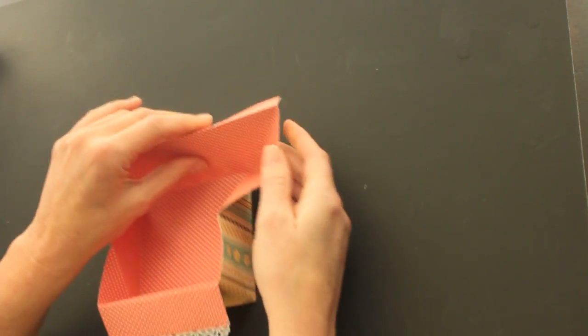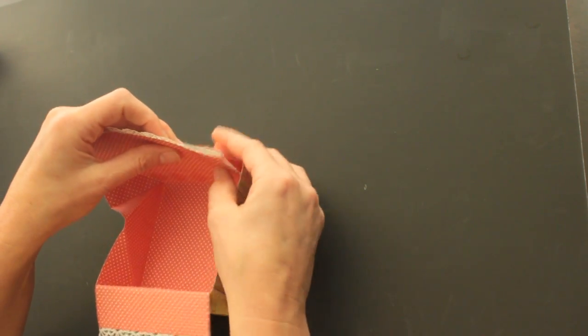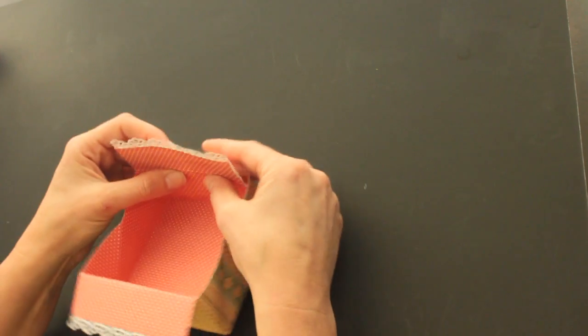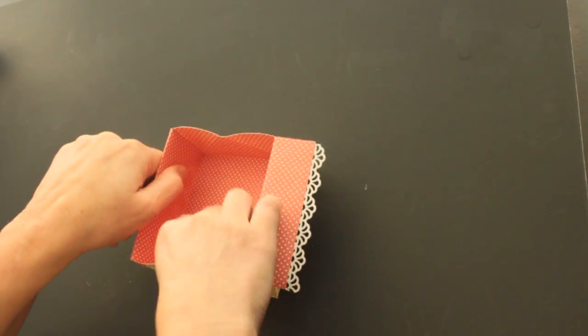Do the same on the other side. Take half your trim up and fold one edge over and then the next and then fold your trim side down. Now you have your box.